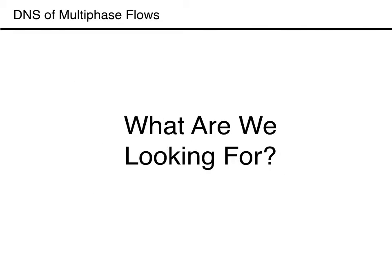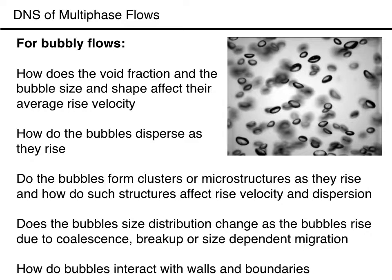Before we embark on a large computational study, it is good to have some idea about what we are looking for. For bubbly flows we are interested in how the void fraction and the bubble size and shape affect the average rise velocity and how they disperse as they rise. Also, do the bubbles form clusters or microstructures of specific shapes and how do such structures affect the rise velocity and dispersion? Furthermore, does the bubble size distribution change due to coalescence, breakup, or size-dependent migration, and how do bubbles interact with walls and boundaries?